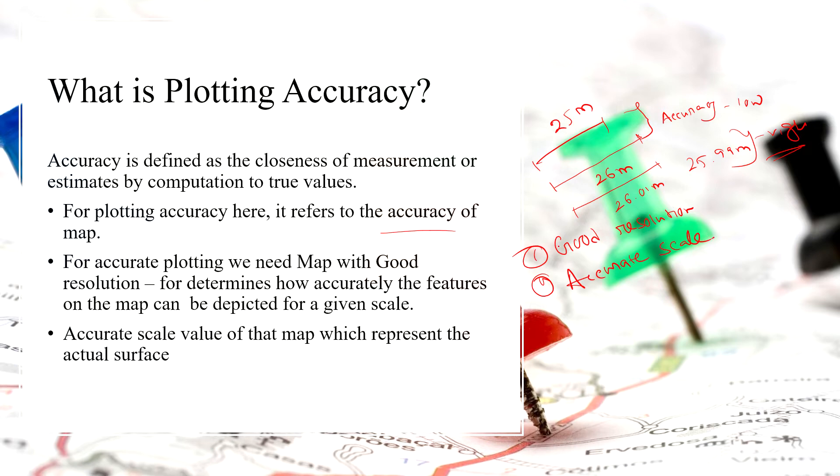Using good resolution, we can determine how accurately the features on the map can be depicted for a given scale. Using accurate scale, we can estimate the actual length of the ground surface, actual area of the ground surface, actual perimeter of the ground surface.